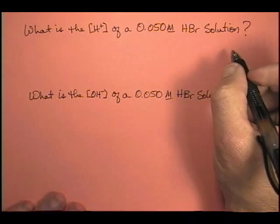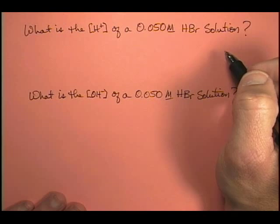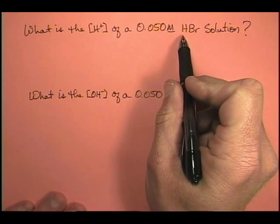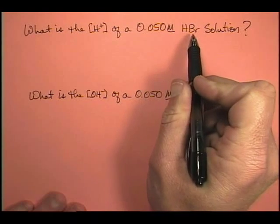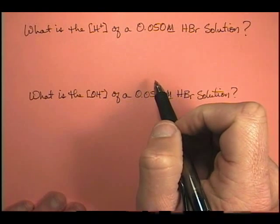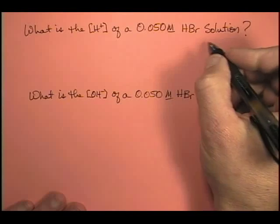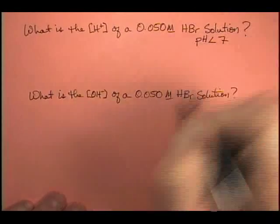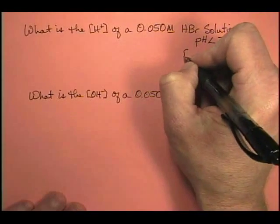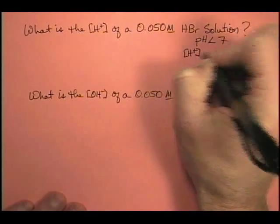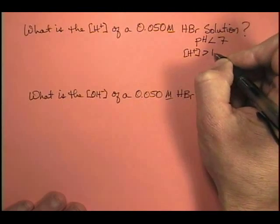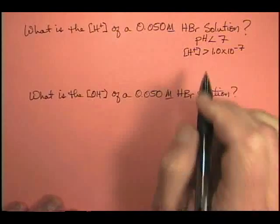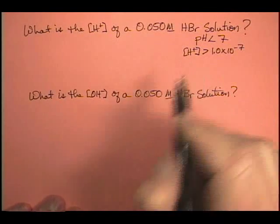So first off, is this an acidic or basic solution? Well, you have hydrogen in front in the formula, so we know that this is an acidic solution. So remember, acidic solutions, we expect the pH to be less than 7, and the hydrogen ion concentration to be greater than 1.0 times 10 to the minus 7. Those are kind of two benchmarks that we need to watch out for.